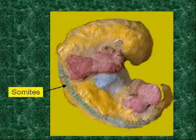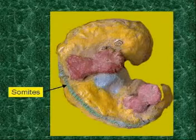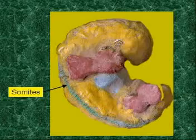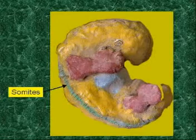Somites reach up to 42 to 44 in number when they are fully developed. They are formed from paraxial mesoderm and are divided into dermatome, sclerotome, and myotome.